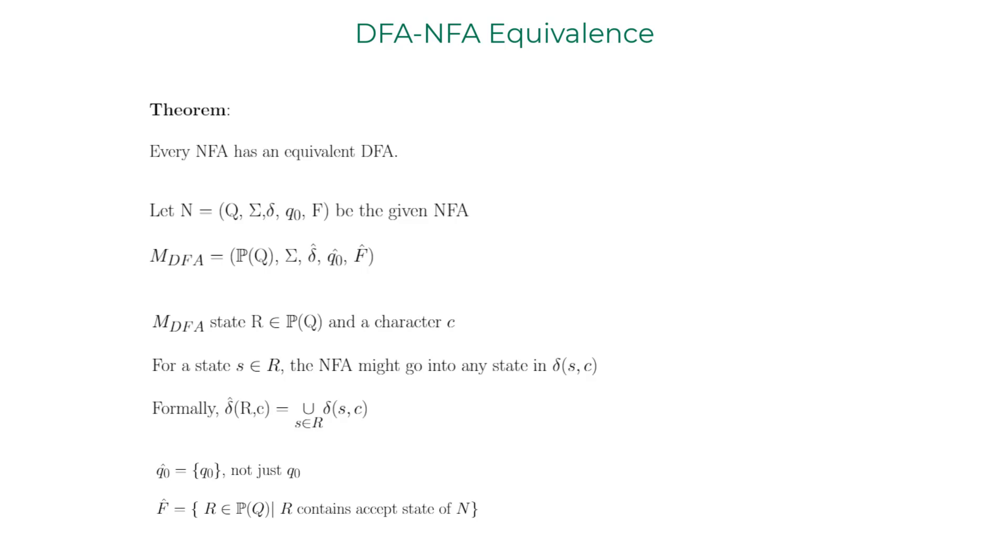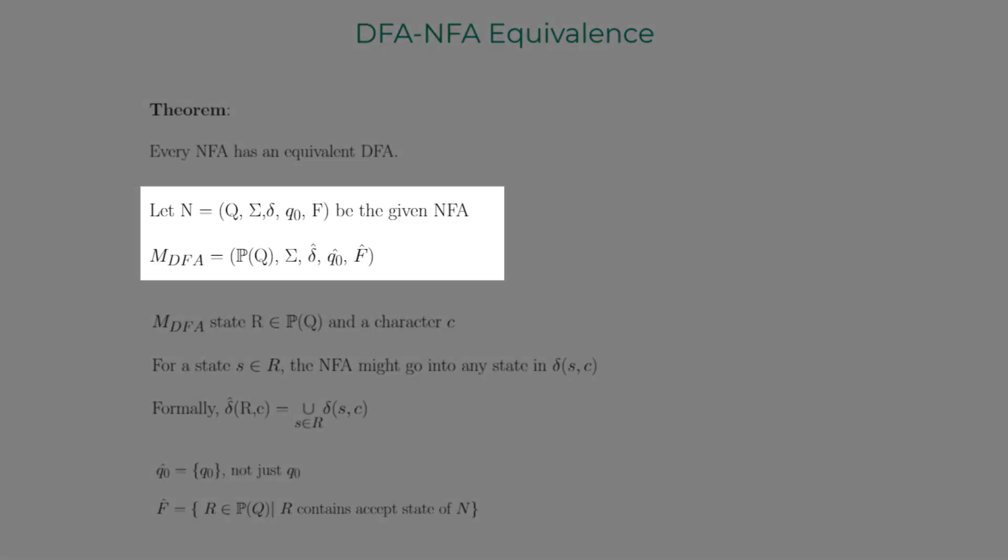With such clear construction of DFA it can be seen that it simulates the NFA in a straightforward way. Adding epsilon transitions to the construction slightly modifies the transition function as well as the start state definition, but the DFA construction principle remains the same. If we run both these DFA and NFA in parallel on a given input string, at every step in the computation the DFA enters a state corresponding to the subset of states that the NFA could be in.